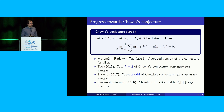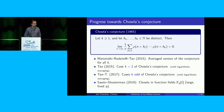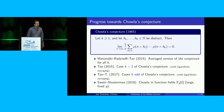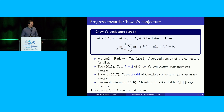This was roughly the state of the art on the conjecture when we started the collaboration at AIM. In particular, cases k at least 4 and k being even remain open.